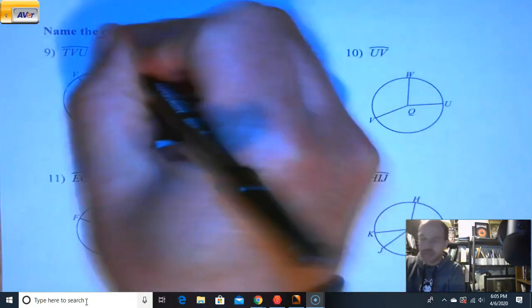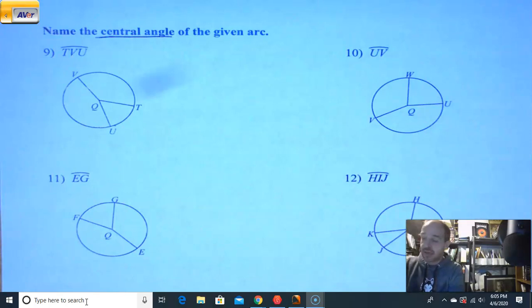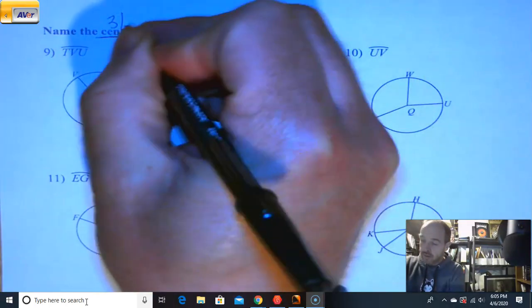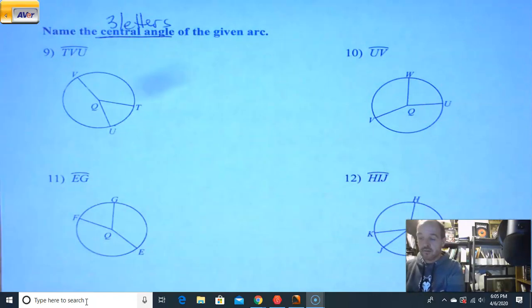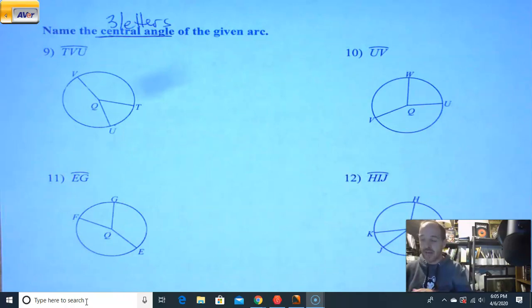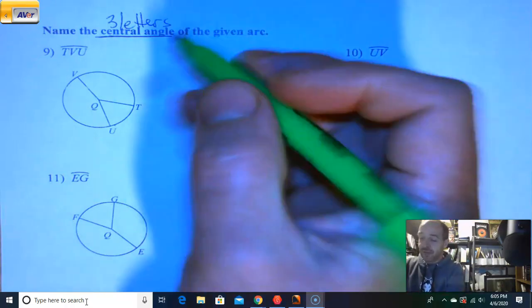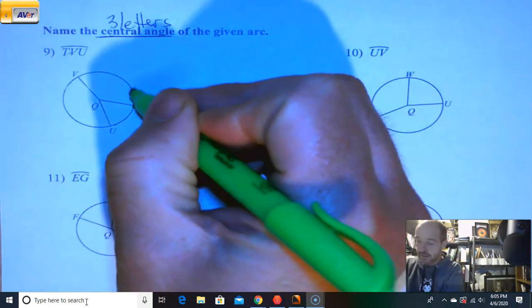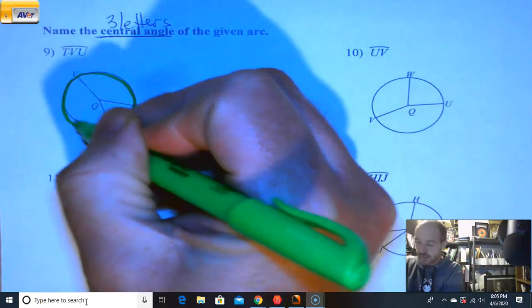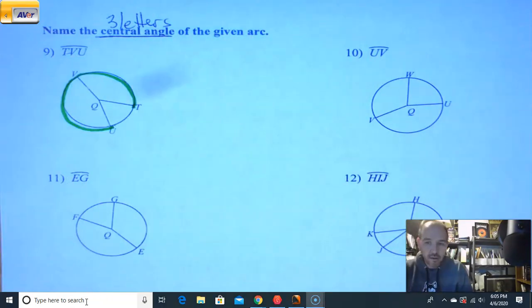So when we're naming the central angle, we're going to have three letters. We're going to have our vertex, the letter in the middle. Now we're going to have the two outer ones that are telling us what this looks like. So we're going to do the same thing that we did on the other side. We're going to copy, in this case, the arc. So T, V, U. Now what type of arc is that again? Major arc. That would be a major arc.